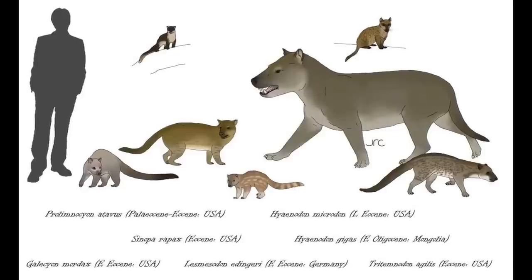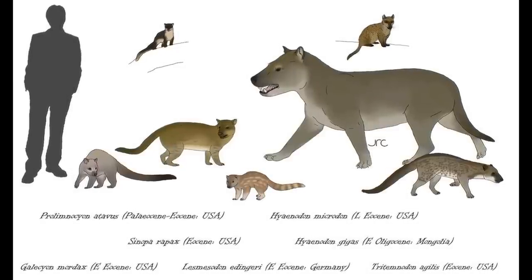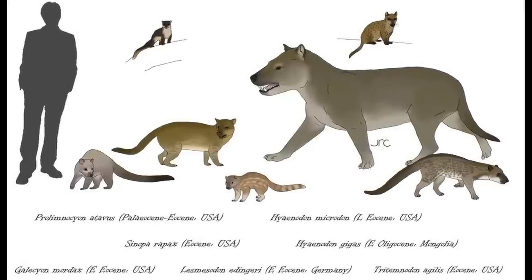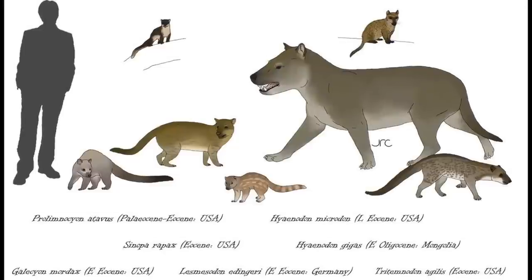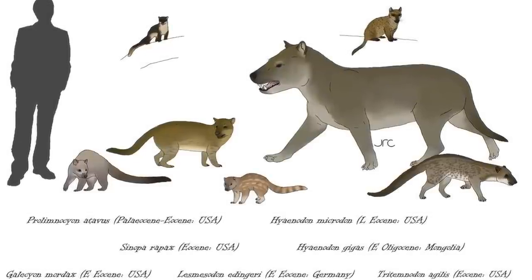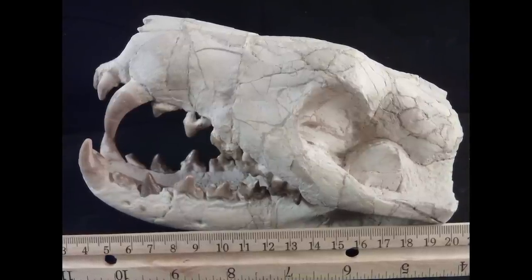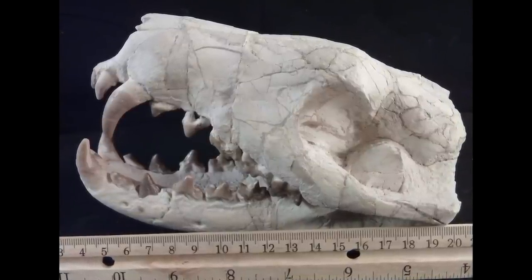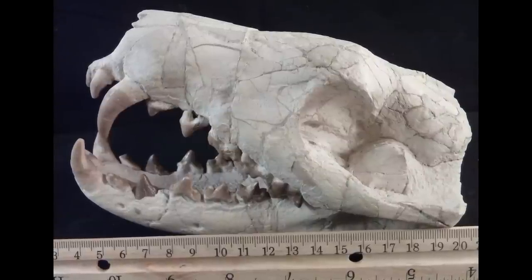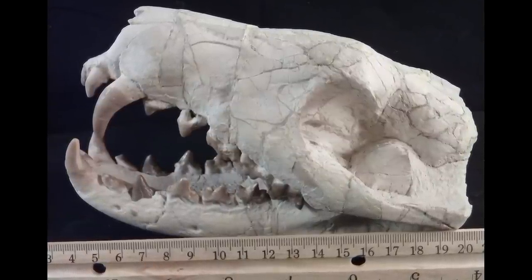Originating in Europe during the early Paleocene approximately 63 million years ago, these animals are characterised by the possession of proportionally large, narrow skulls, elongated bodies, and slicing carnassial teeth adapted for tearing or crushing. The carnassials in Hyenodonts are generally the second upper and third lower molars. However, some genera possessed as many as three sequential pairs of carnassials, or carnassial-like molar teeth.